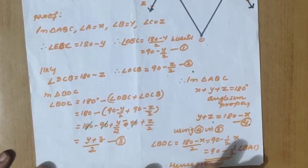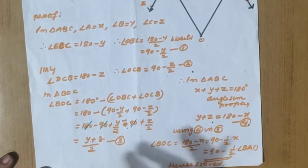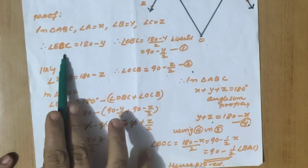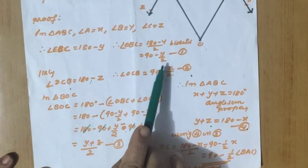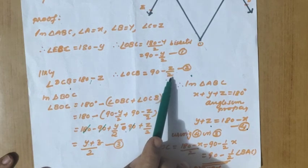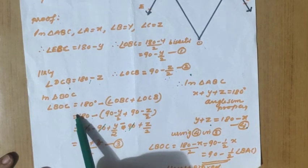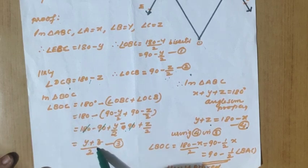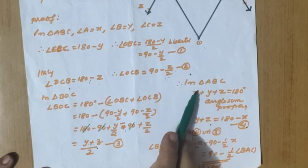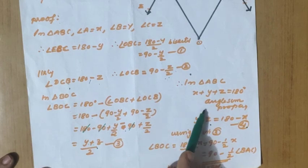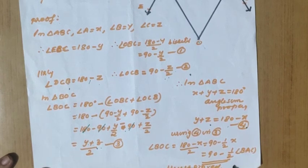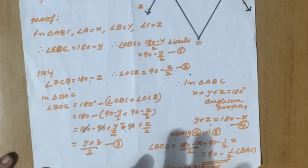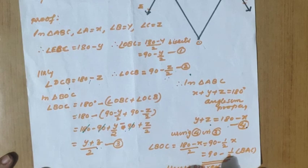To summarize question 17: we used the bisector property to get 90 minus y by 2 and 90 minus z by 2, then the angle sum property in triangle BOC to get y plus z by 2, then substituted y plus z equals 180 minus x from the original triangle ABC, giving 90 minus half of angle BAC. Hence proved. With this, I am wrapping up the PT1 solutions. Thank you.